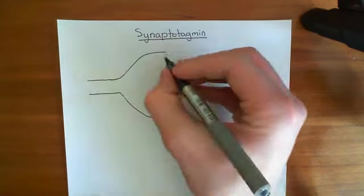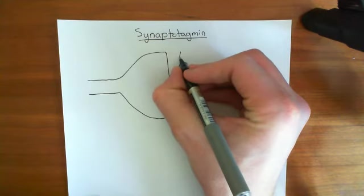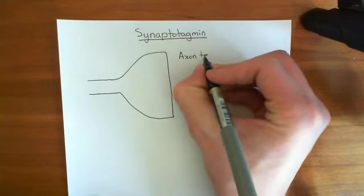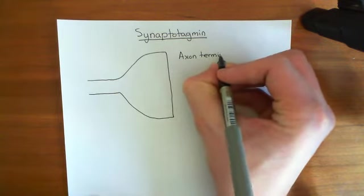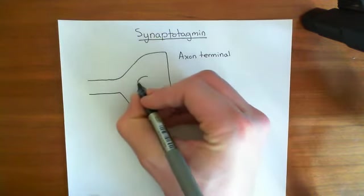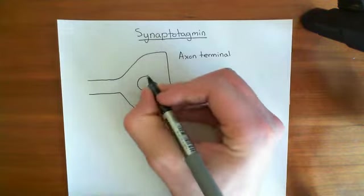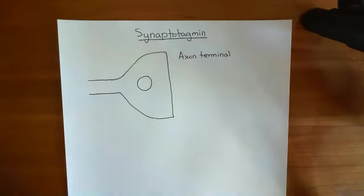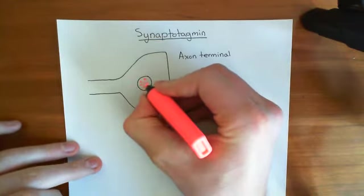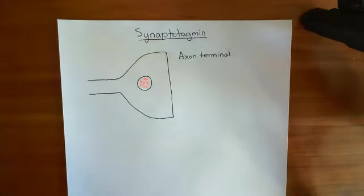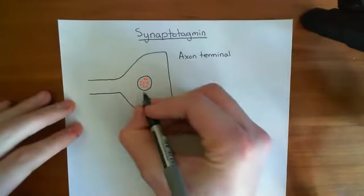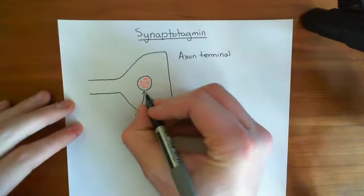Here is our axon terminal. In the axon terminal, what happens is we fill vesicles with neurotransmitter. This is a vesicle full of neurotransmitter — that's known as a synaptic vesicle.